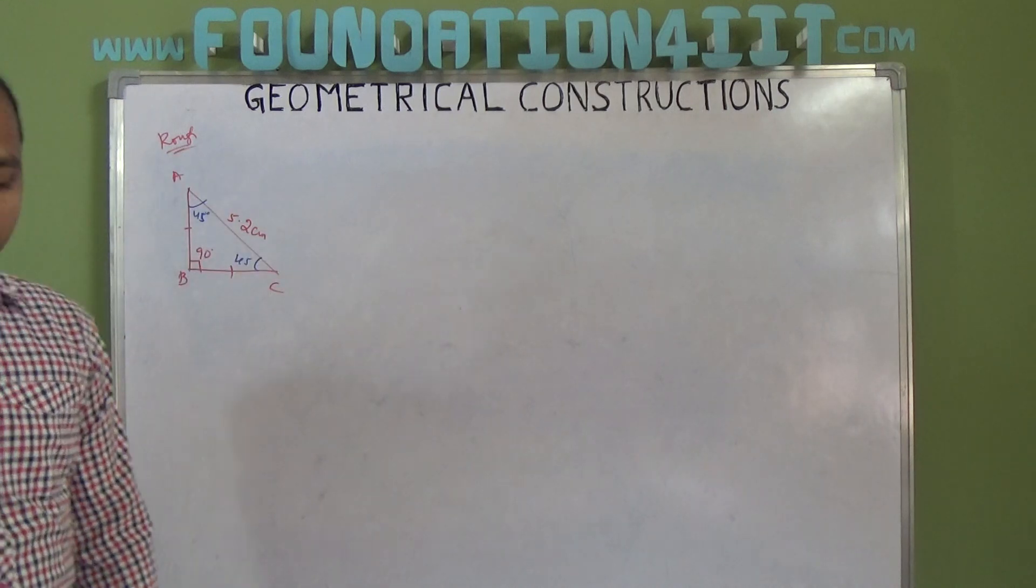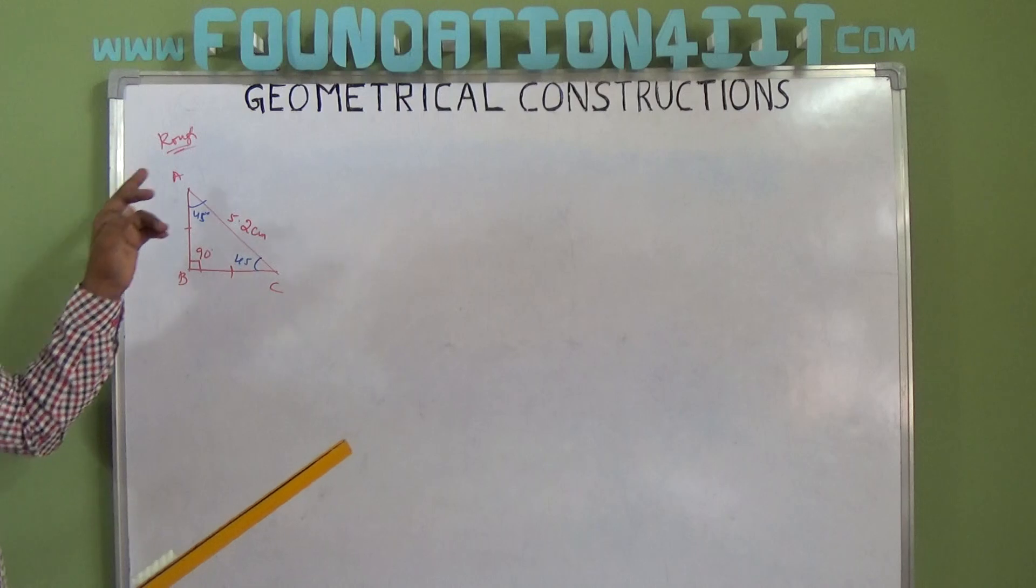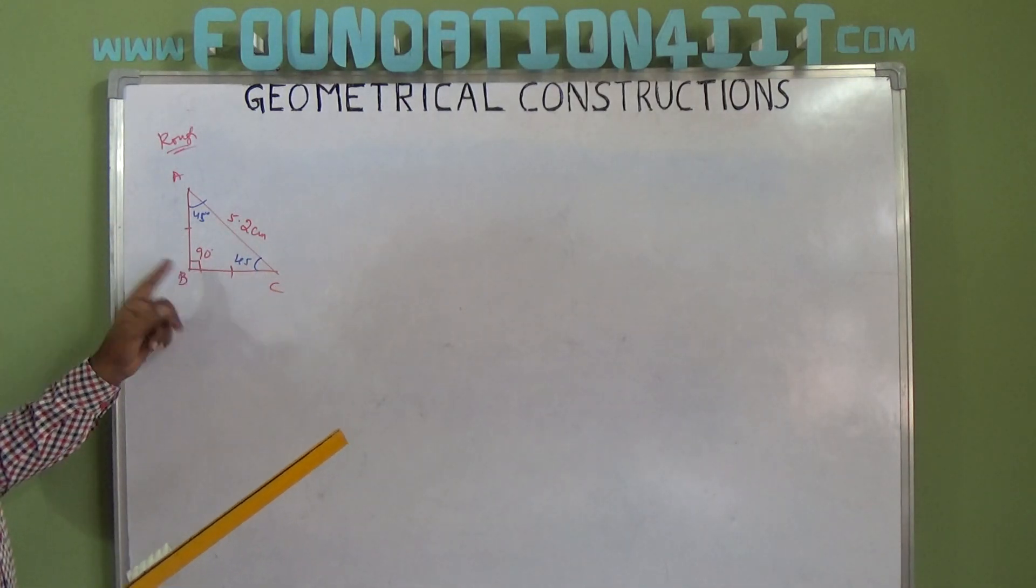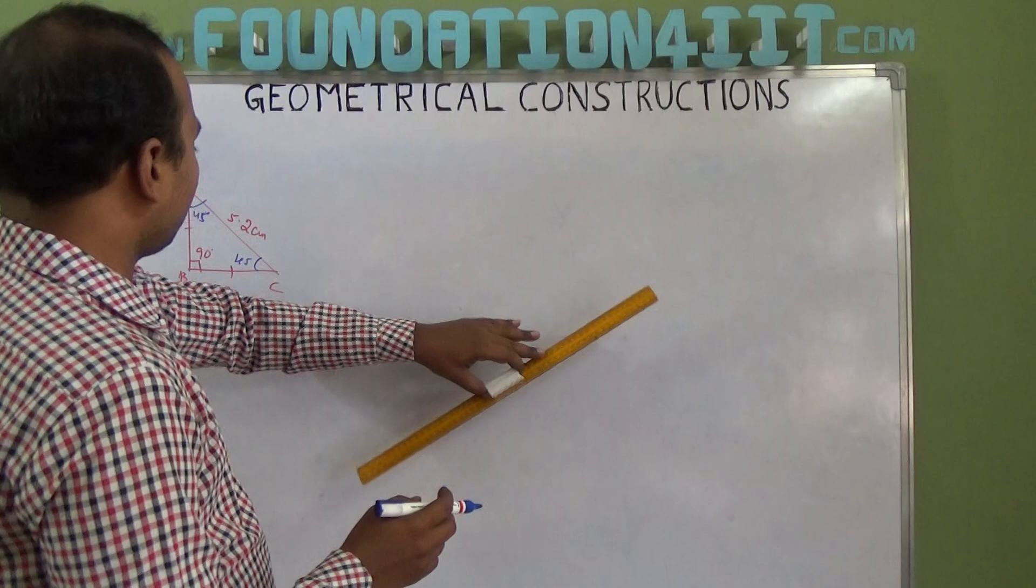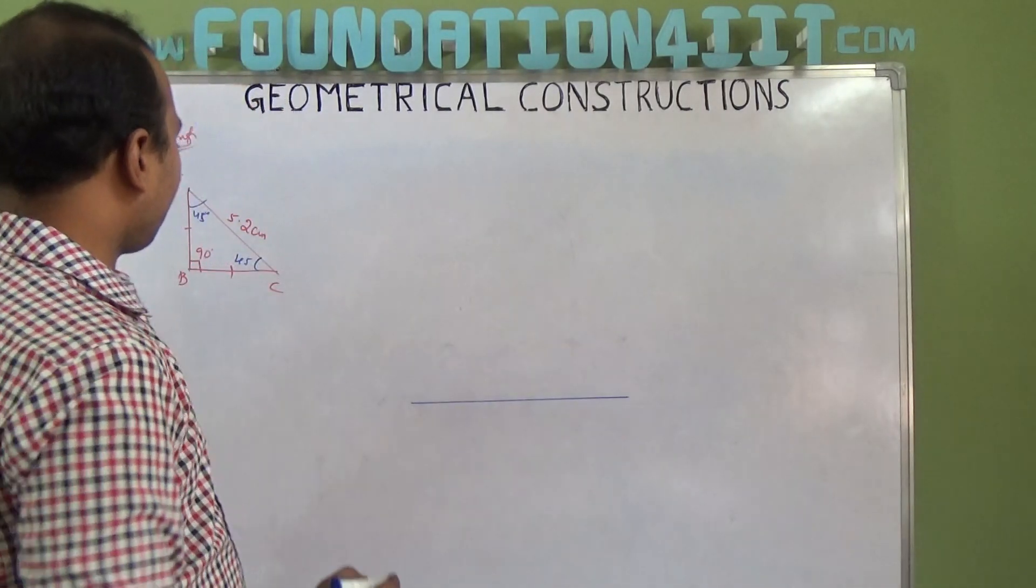So first we draw the hypotenuse as the base. We need finally this triangle where AC should be 5.2 and angle B must be 90 degrees. So I am taking hypotenuse itself as the base AC.